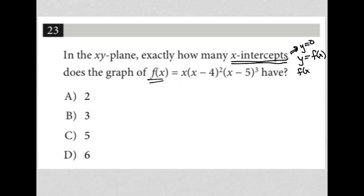Which means I can take this equation, f(x) = x(x - 4)²(x - 5)³, and rewrite it as 0 = x(x - 4)²(x - 5)³. So what am I doing? I'm looking for x values that make this statement true.